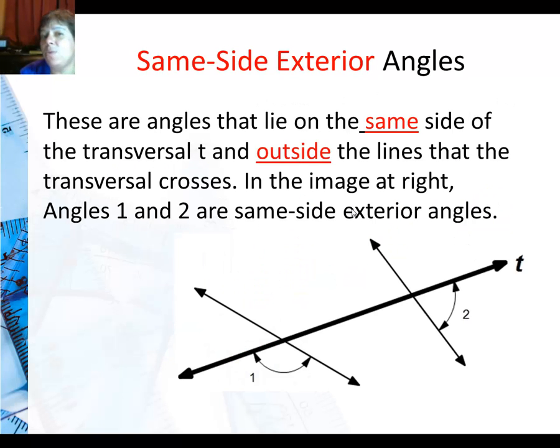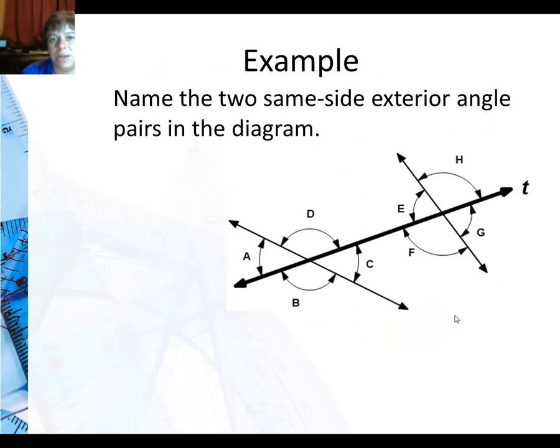Okay. Now we've done interior, so now we're going to do exterior. I still have my transversal, but now I'm looking at angles that are outside of the two lines. Here, angle 1 is outside and on the bottom of the transversal. And angle 2 is also outside and on the bottom of the transversal. So these are same-side exterior angles.